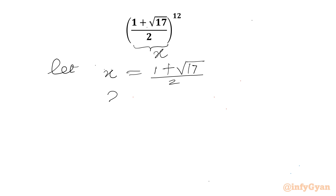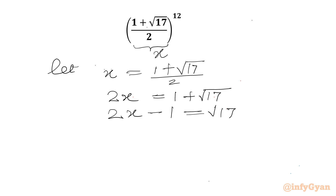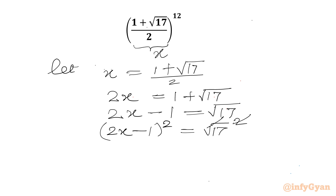We can cross multiply, so 2x will become 1 plus square root 17. Now subtract 1 from both sides: we will get 2x minus 1 equal to square root 17. Now I will consider squaring both sides. So (2x minus 1) whole square equal to (square root 17) whole square. The square root and square will cancel. In LHS we apply the (a minus b) whole square formula, which gives 4x square minus 4x plus 1, and RHS is 17.